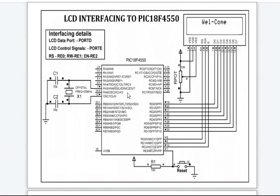The figure shows the interfacing diagram of the PIC microcontroller with the LCD. In the diagram, you can see that the data pins D0 to D7 of the LCD are connected to RD0 to RD7 of the PIC18F4550 microcontroller.